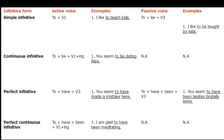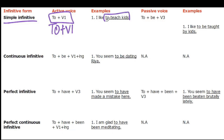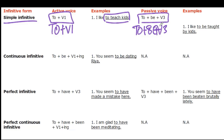The simple infinitive in the active voice is formed with 'to + base form of the verb.' For example: 'I like to teach kids.' In the passive voice the structure is 'to + be + past participle (V3).' For example: 'I like to be taught by kids.' This is a simple passive infinitive.